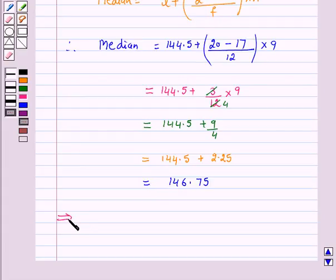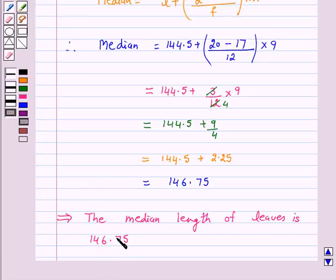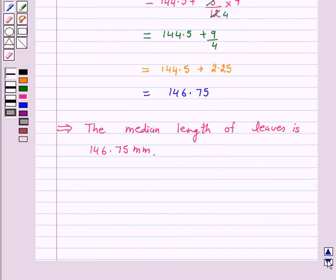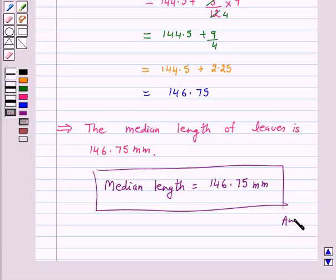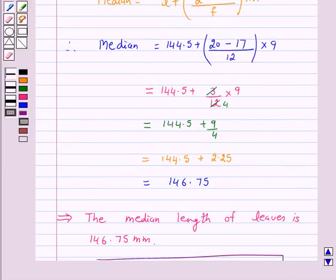This implies the median length of leaves is 146.75 millimeter. Hence, the answer for the above question is, median length is equal to 146.75 millimeter. I hope the solution is clear to you. Bye and take care. Thank you.